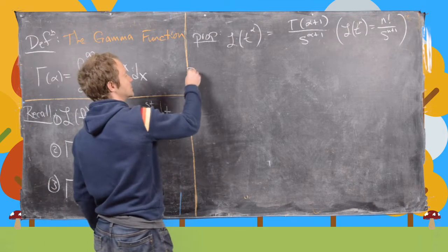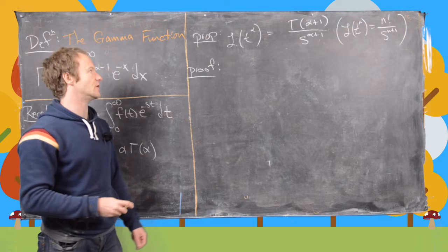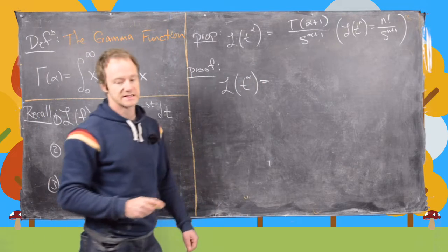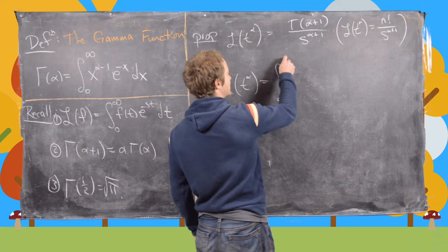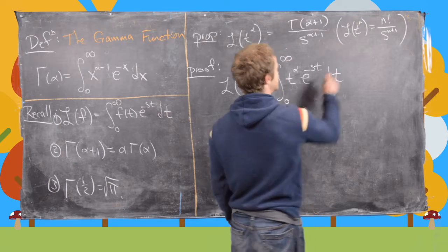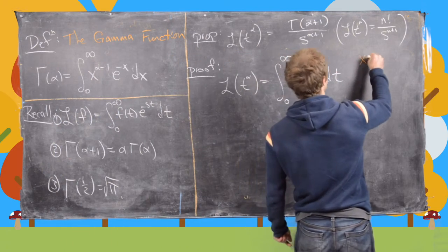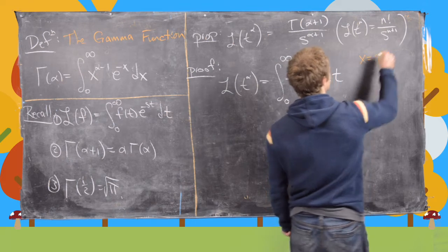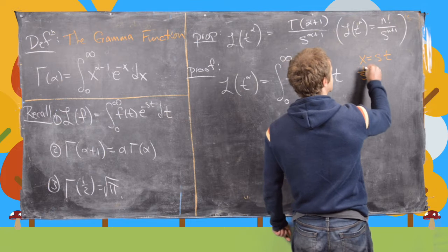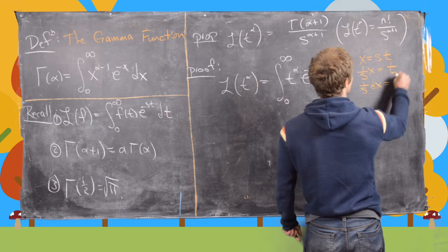Let's look at this proposition and its proof. It's a fairly straightforward computation if you know the trick. The Laplace transform of t to the alpha equals the integral from 0 to infinity of t to the alpha times e to the minus st dt. Now we want to do a change of variables. We take x to be equal to st, which makes t equal to x over s, and dt equal to 1 over s dx.